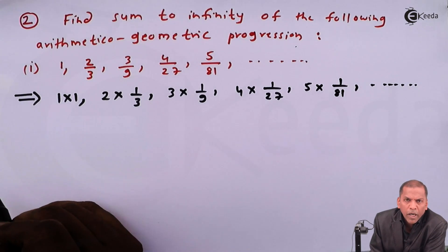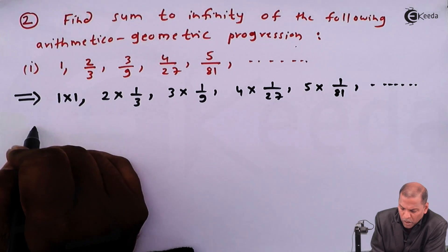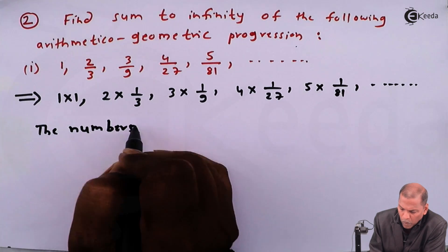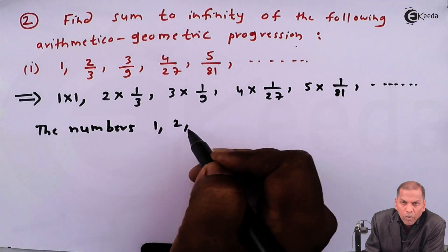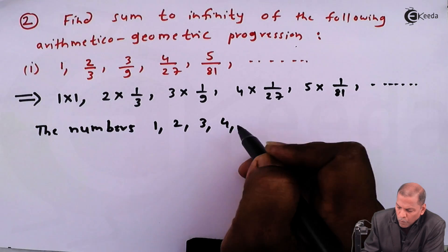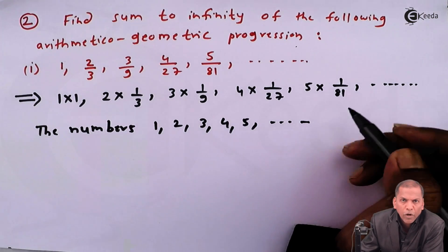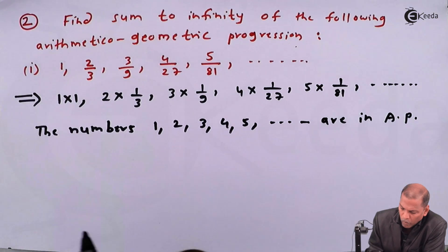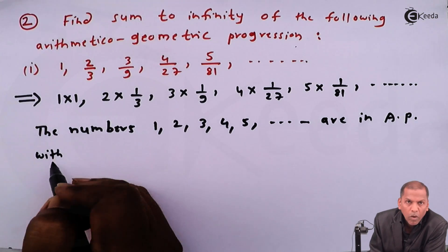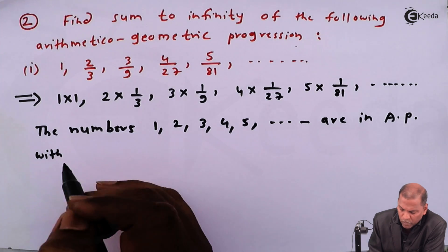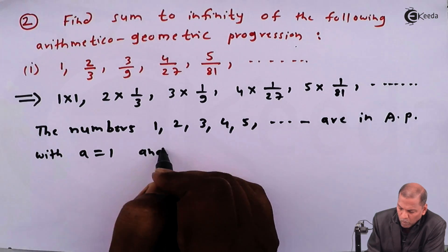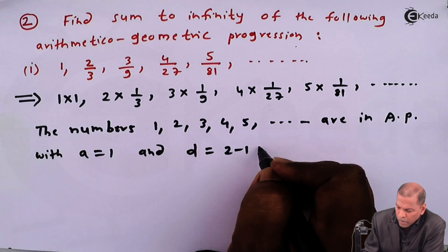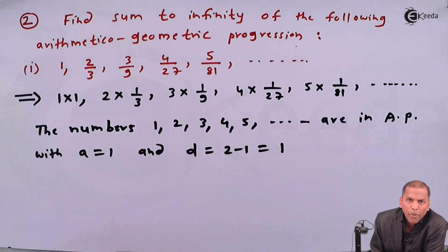Here we consider only the first terms — that is, the numbers 1, 2, 3, 4, 5, and so on, which are in AP with first term a = 1 and common difference d = 2 − 1 = 1.